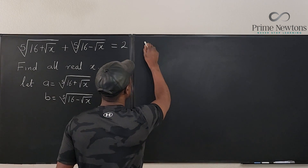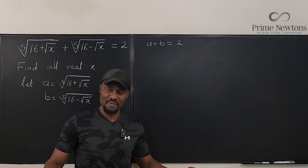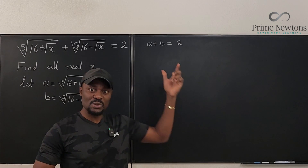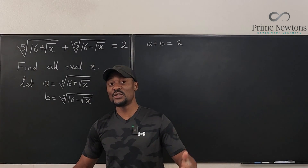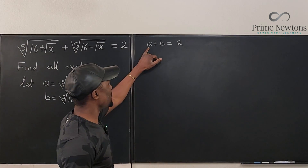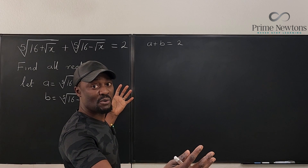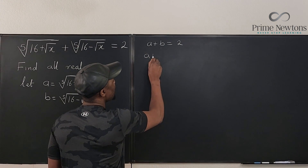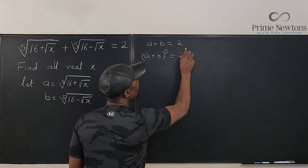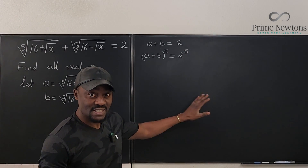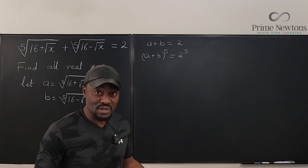We can say a plus b is equal to 2. So a plus b equals 2 — that's the equation we need to solve. Now, we need to get rid of these fifth roots, and to do that you need to generate the fifth powers. So we need a to the fifth and b to the fifth. We'll raise both sides to the fifth power: (a+b)^5 = 2^5 = 32. What's hard to compute is (a+b)^5, so we'll use binomial expansion.